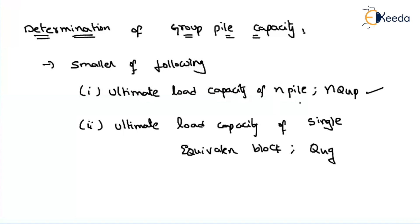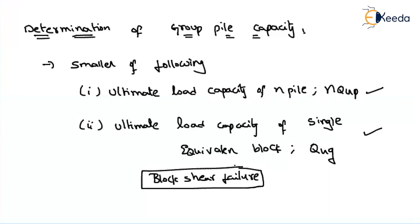In the second case, we assume that all the piles in the group are going to fail together — this is known as block shear failure. For that, we find the load carrying capacity of the group as a single equivalent block, denoted as Q_u. We consider the smaller of these two values as the load carrying capacity of the pile group. In the next video, we will see how to find the bearing capacity in clay and also in sands.